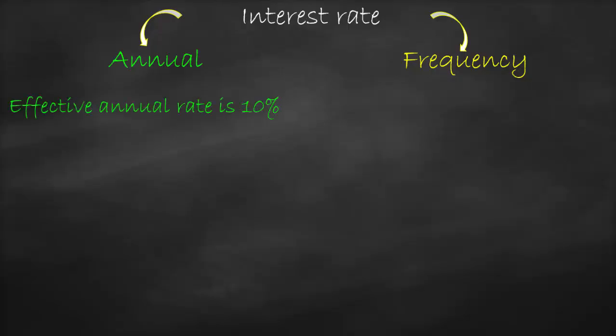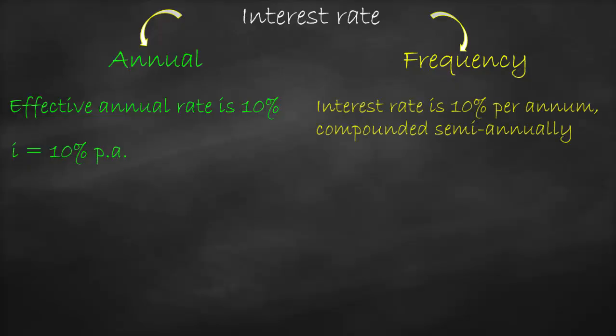If the interest rate is paid or received annually, we call it the effective annual rate. Put into words, it would be: effective annual rate is 10%, so our i is equal to 10% per annum.